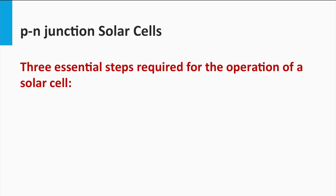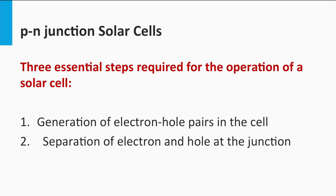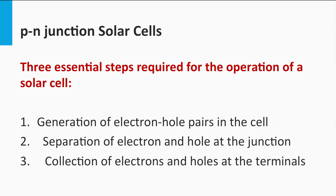In summary, by illuminating a p-n junction we can generate, under closed-circuit conditions, a current and, under open-circuit conditions, a voltage. The p-n junction is a device which facilitates the photovoltaic effect. As discussed in the first week, the photovoltaic effect has three essential steps: generation of electron-hole pairs due to light absorption; separation of electrons and holes; and collection of electrons and holes at the contacts. Step 1 takes place in the semiconductor material, step 2 occurs at the space charge region, and step 3 takes place at the terminals.